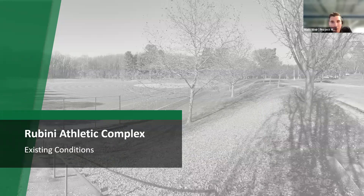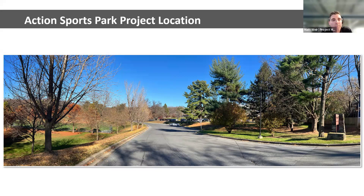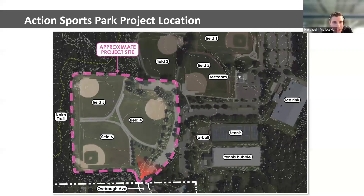Transitioning to this specific site, let's talk about the athletic complex. If you've visited before, you'll recognize this image — this is your view as you enter the park. To the right is a steep slope up to the tennis bubble, tennis courts, and basketball courts. On the left side is a steep slope leading down to the baseball and softball fields. This map shows the approximate project area for the Action Sports Park highlighted in pink. The tennis bubble is at upper elevation, the roadway and parking lots at middle elevation, and fields four, five, and six at the lowest elevation.